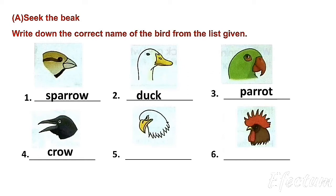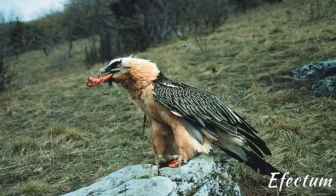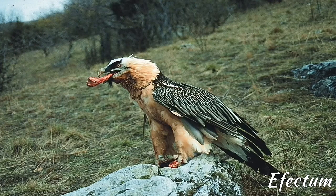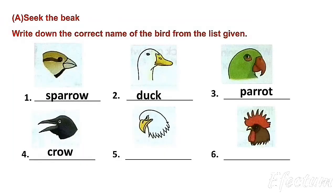Number 5. Flesh eating birds such as eagle, vulture and hawk feed on small birds and animals. They have strong sharp hooked beaks for tearing flesh. So the answer is eagle.